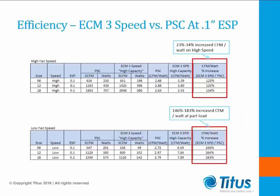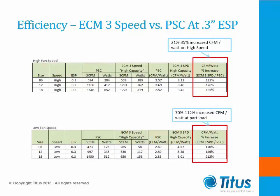If we look at a comparison between a three-speed ECM versus a three-speed PSC, the energy usage at the same design conditions for the ECM is lower, which we can see in the CFM-to-watt comparison. The ECM also has a greater range, allowing for lower turndown and increased energy savings. At a higher external static pressure, the greater turndown range allows fan coils with ECMs to better match loads, allowing for longer run times at decreased energy draws. We will see how that helps us with humidity control in a few slides.